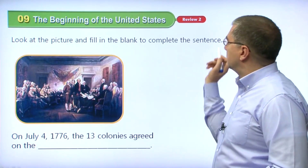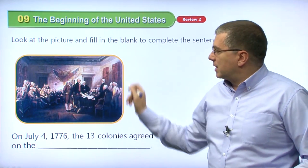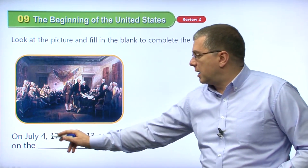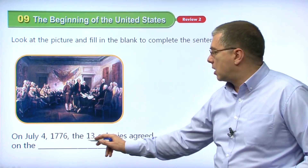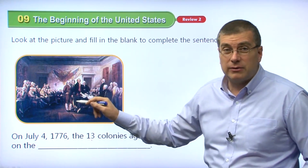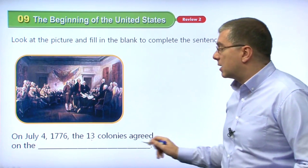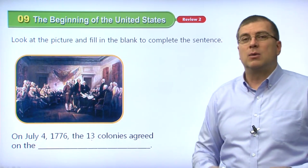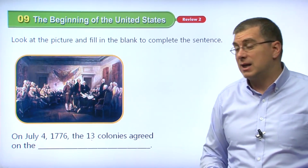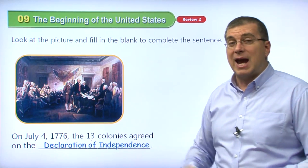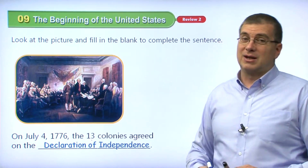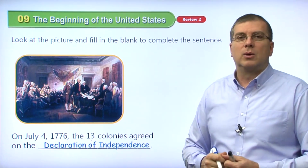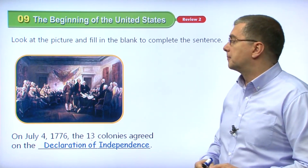Look at the picture and fill in the blank to complete the sentence. In this picture, we can see many people gathering around — this is the Congress of Philadelphia. On July 4th, 1776, the 13 colonies' representatives met and agreed on the Declaration of Independence — a type of letter sent to King George in England. It was a declaration of independence, and this is what started the war with England. King George said no, and America won the war.